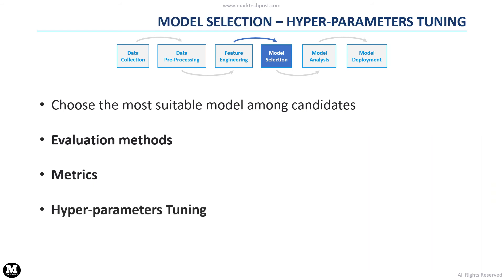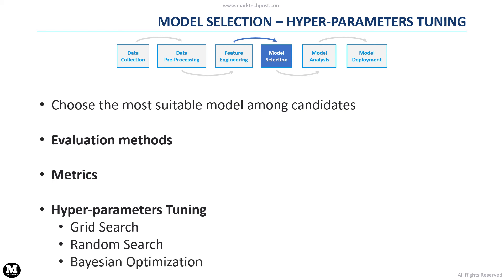We can now see some possible hyperparameter tuning techniques we can use during the model selection process. Grid search is the most basic method — we evaluate a model for some possible combinations of its hyperparameters and then select the model with the best results. With the random search technique instead, we consider statistical distributions for each hyperparameter, and combinations are built by randomly sampling values from those distributions. Finally, with the Bayesian optimization technique, at each iteration we choose a hyperparameter combination that we expect to be optimal based on the results obtained in previous steps.